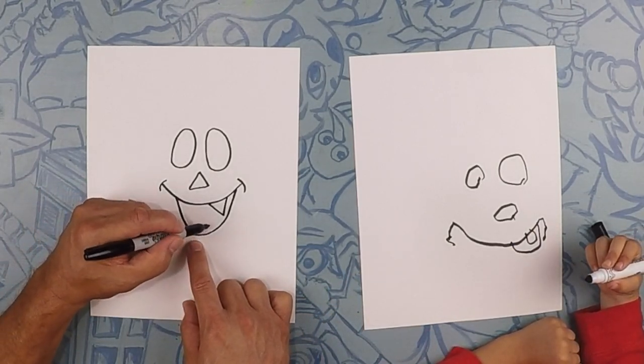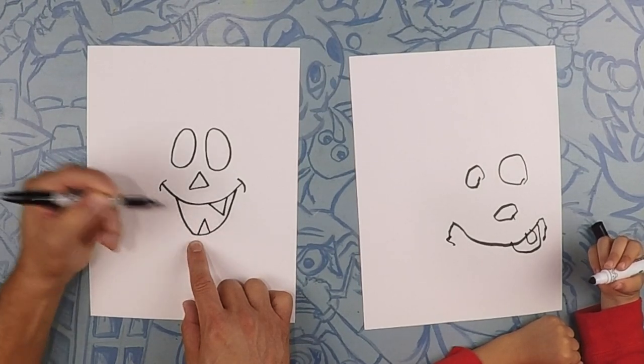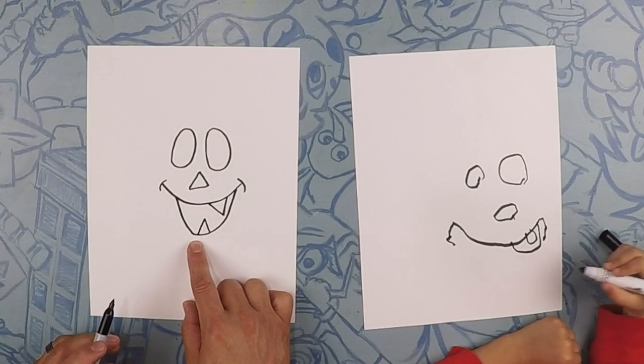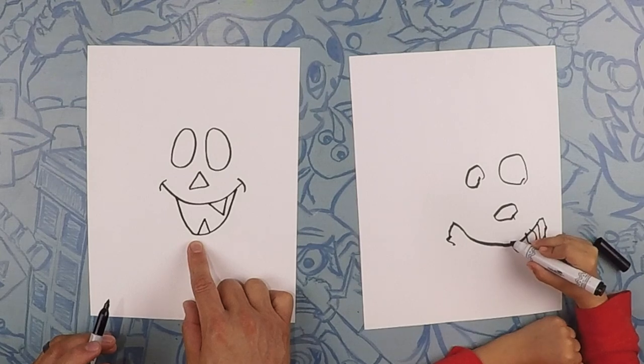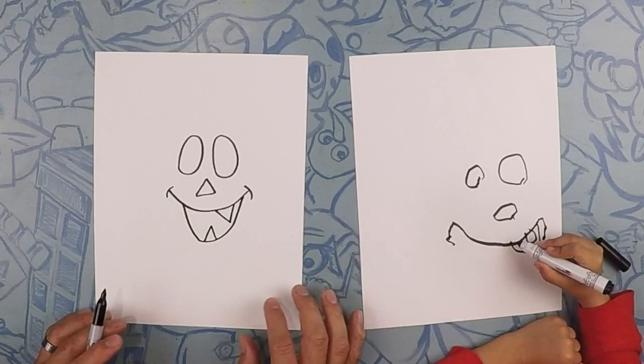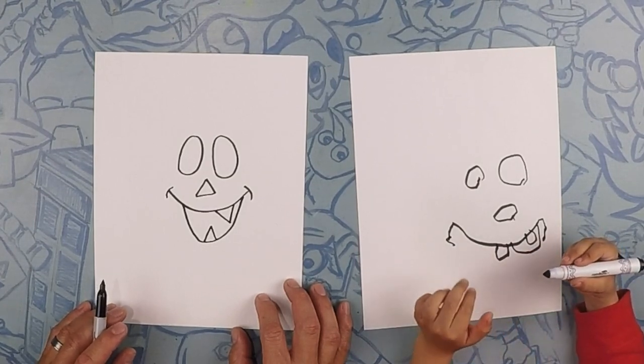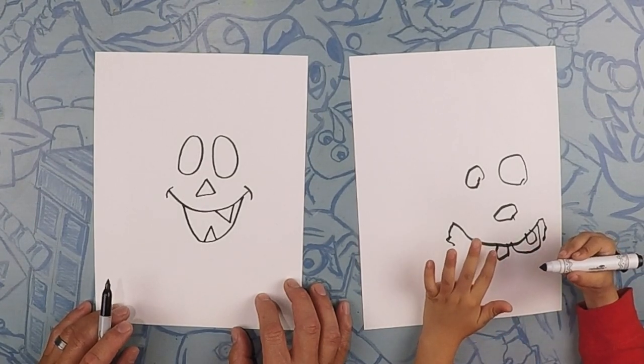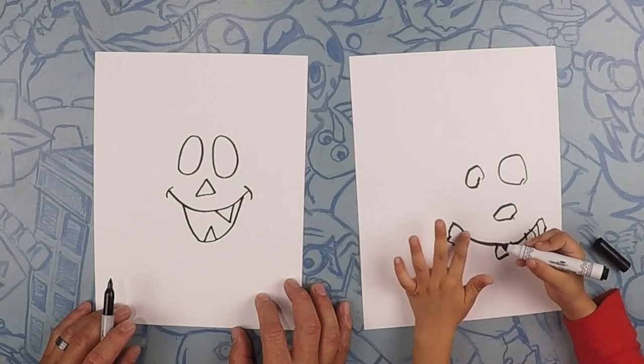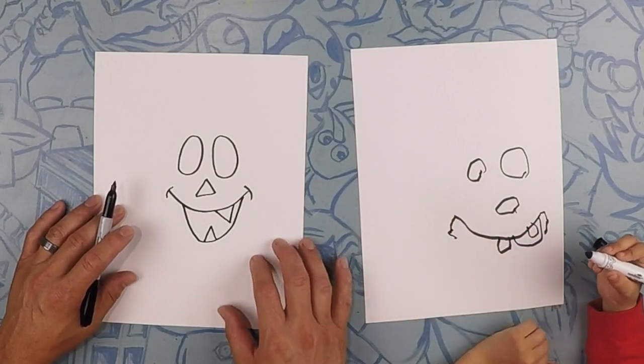And if you want to, you can add another tooth right here, just like that. You want to put another tooth? Put it inside the mouth. Because he only has teeth on the bottom. Oh, he only has teeth on the bottom. Okay.